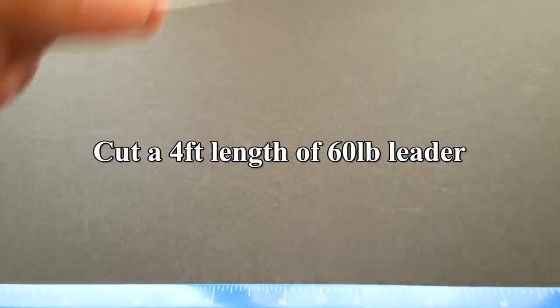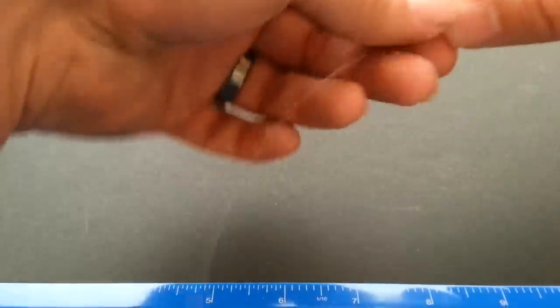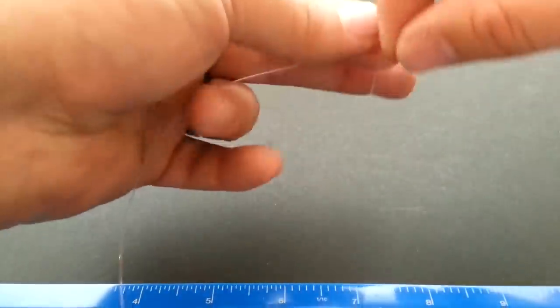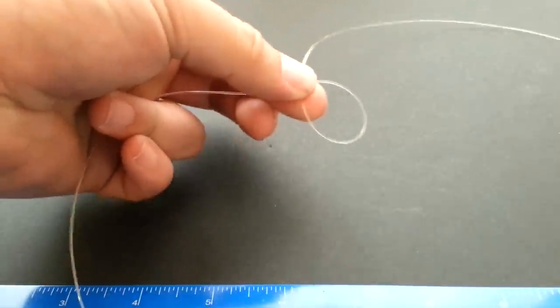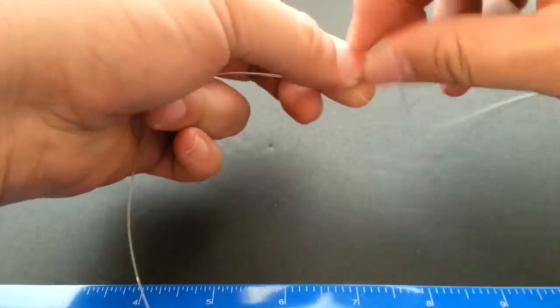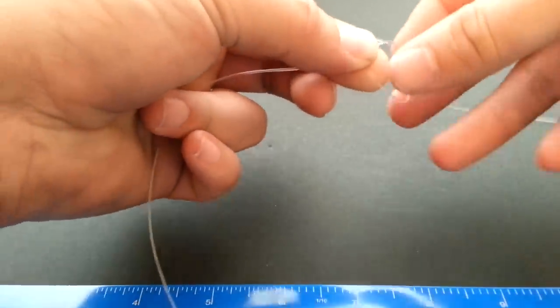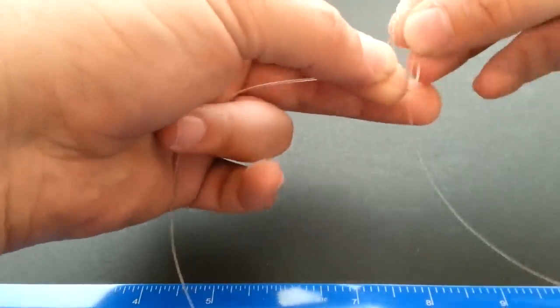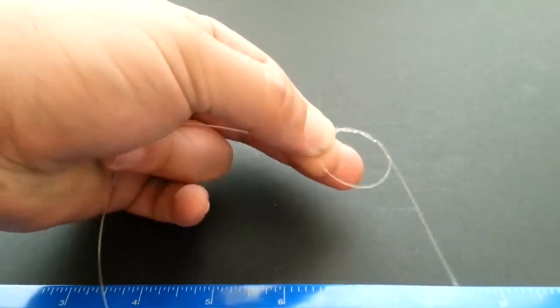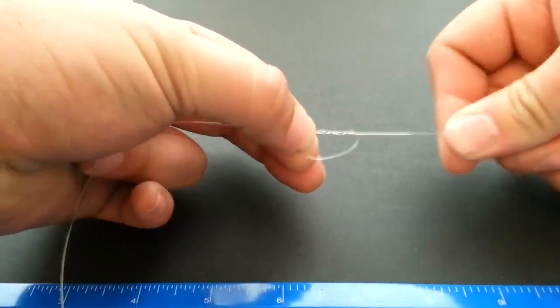The main body of your rig, you're going to be using 60 pound mono and you're going to measure off about 25 centimeters, 250 millimeters, and you're going to create a little double overhand knot.